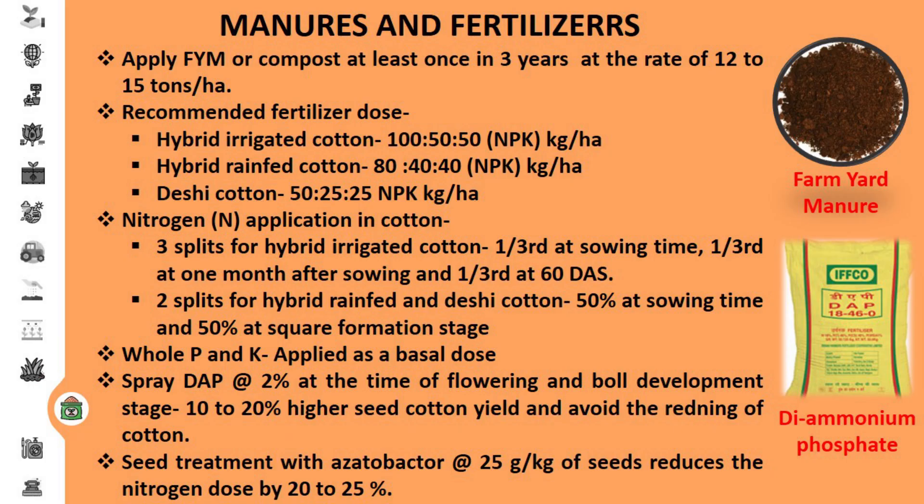In case of manures and fertilizers, apply FYM or compost at least once in three years at the rate of 12 to 15 tons per hectare. The recommended fertilizer dose for hybrid irrigated cotton is 100:50:50 kg per hectare NPK. For hybrid rain-fed cotton it is 80:40:40 kg per hectare NPK, and for desi cotton it is 50:25:25 kg per hectare NPK. For hybrid irrigated cotton, the nitrogen dose is split into three equal doses: one-third at sowing, one-third at one month after sowing, and one-third at 60 days after sowing.